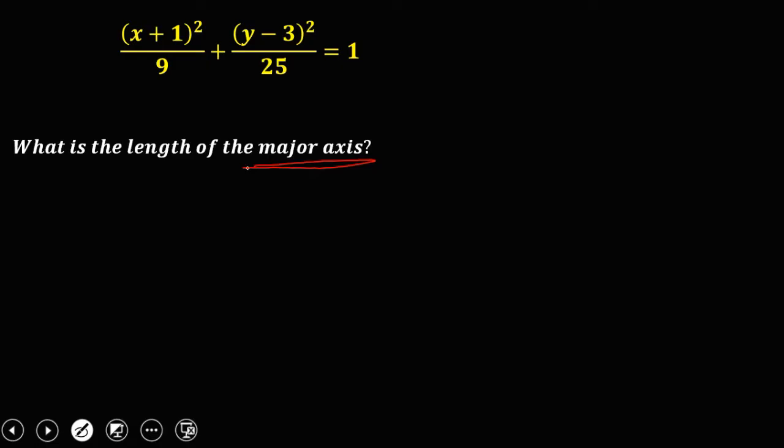Now, in an ellipse, the larger denominator is A squared, so this 25 is A squared, and this 9 is the B squared. Then since A squared is the denominator of y squared, therefore this ellipse is in vertical position.